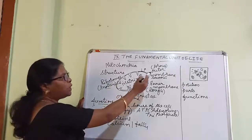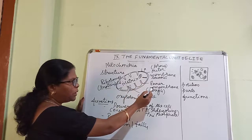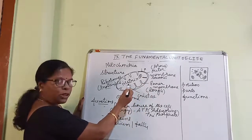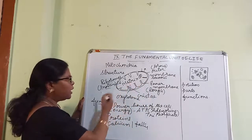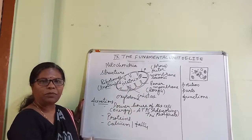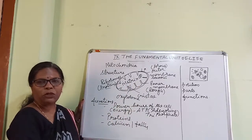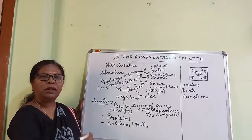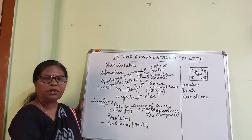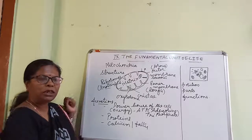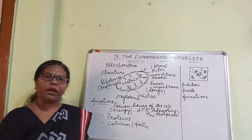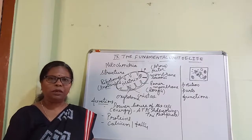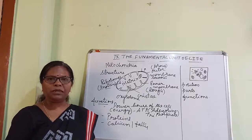So, the outer membrane, inner membrane, the cristae, matrix, DNA, and the protein molecules in the form of ribosomes — all of these make the mitochondria an important organelle in the cell. Children, in the next class we need to know about vacuoles and plastids. I will meet you in the next class. Thank you.